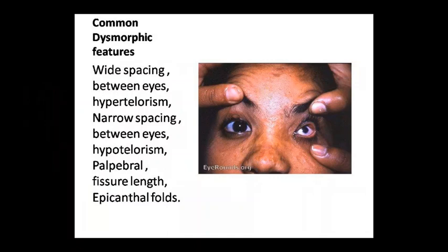In common dysmorphic features, wide spacing can be seen in the eyes — you can see very far-set eyes. Hypertelorism can be seen, as well as narrow spacing in the eyes, which means hypotelorism. Palpebral fissure length can be seen. Epicanthal folds can also be seen in the eye.